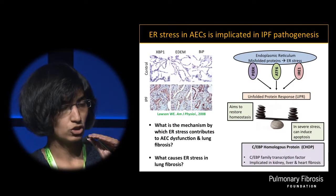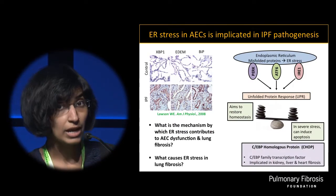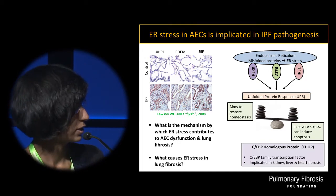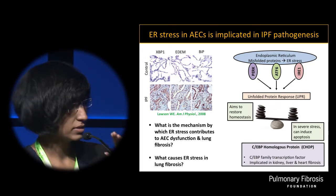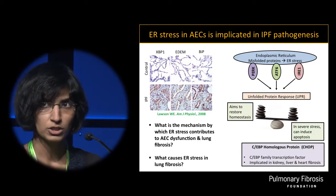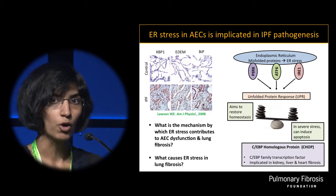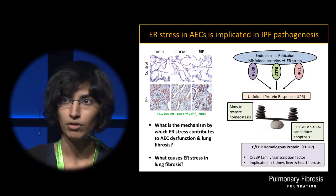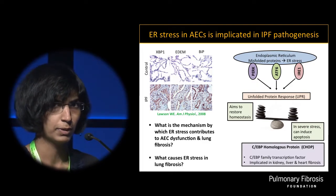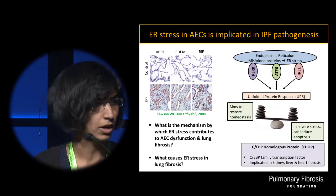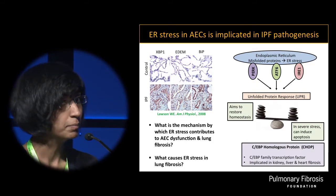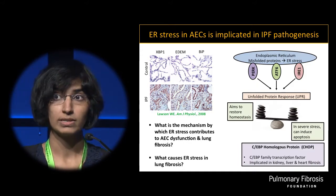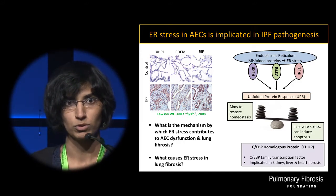One of the ways in which type 2 AECs can react to injury is by experiencing ER stress, or endoplasmic reticulum stress. This is a paper from our lab published almost 10 years ago, and you can see prominent staining of ER stress markers in hyperplastic AECs around areas of fibrosis in lungs of IPF patients. It's been almost a decade that ER stress has been implicated in lung fibrosis; however, the mechanisms by which ER stress impacts AEC dysfunction and lung fibrosis are not clear.